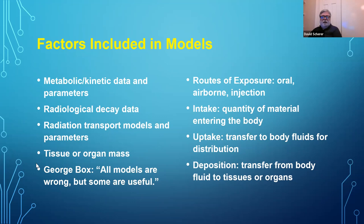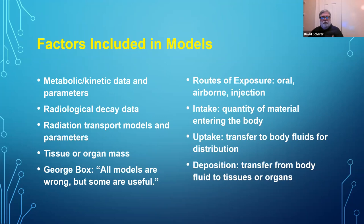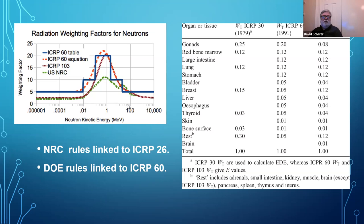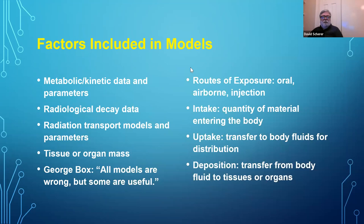Radiation dose is energy absorbed per unit mass, so we need to know the mass of the particular tissue we're interested in. We're going to calculate tissue doses, then weigh them by tissue weighting factors — doing the calculations on an organ-by-organ basis. For anyone who just joined: we're doing internal dosimetry, using the same factors as external dosimetry — radiation weighting factors and tissue weighting factors. It's a little complicated because once materials are in the body, one organ can irradiate another, so we have to use computer models.